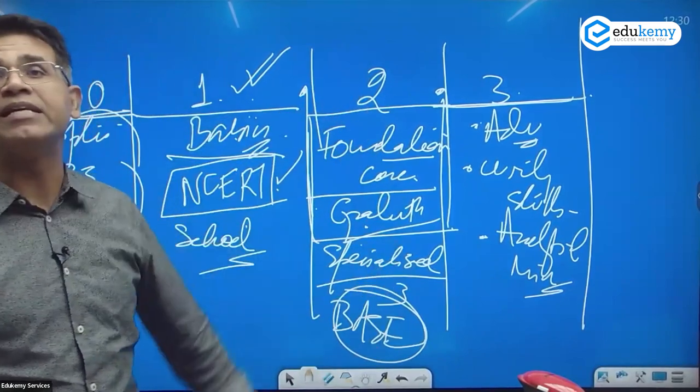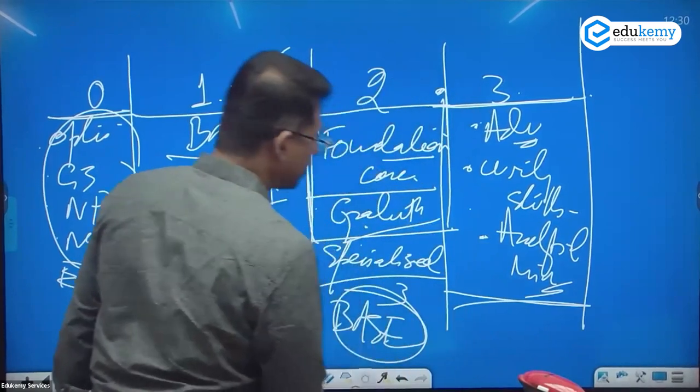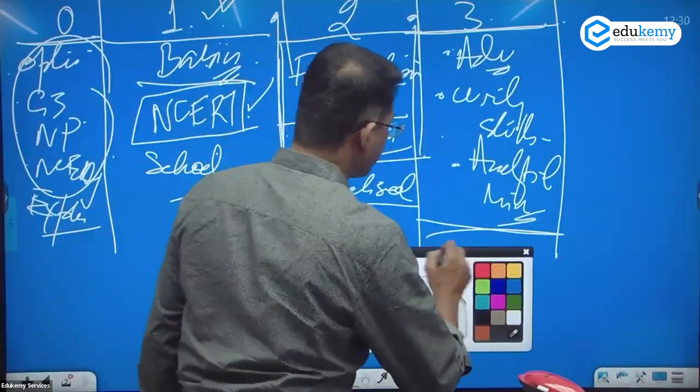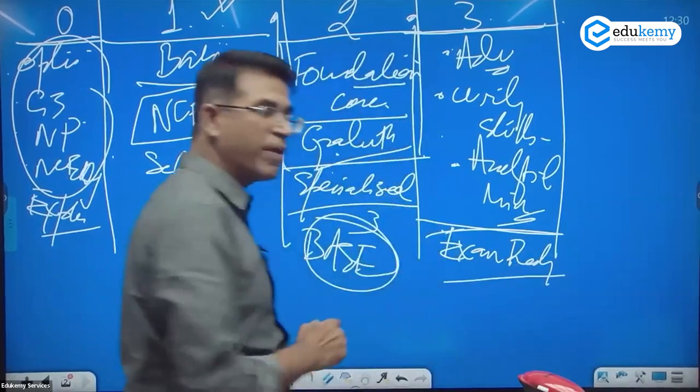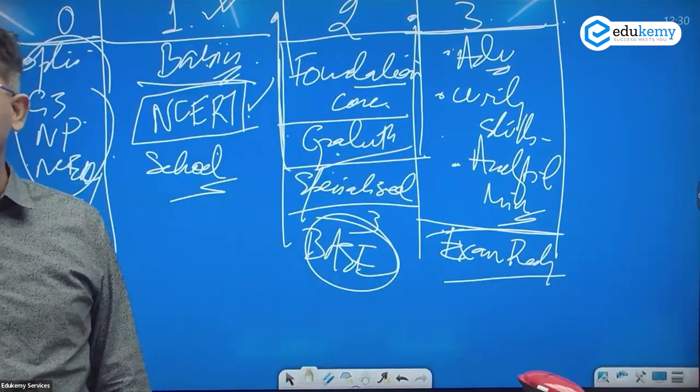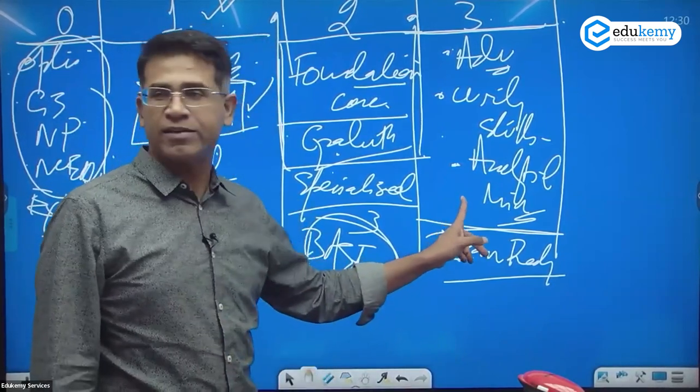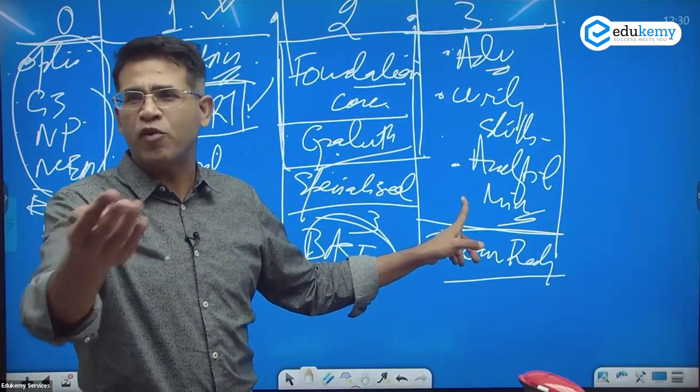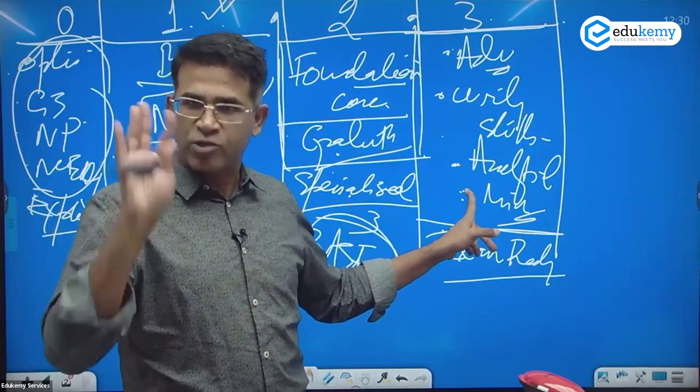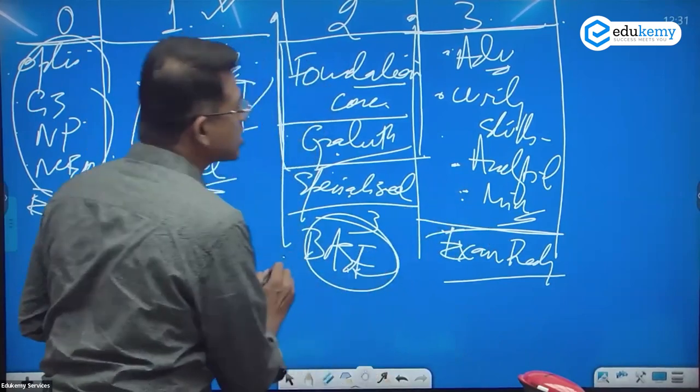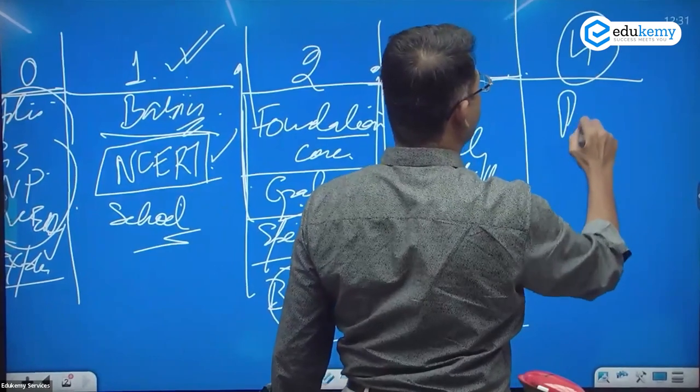In your question paper, out of 10 questions you will have at least five to six questions which are here, and maybe three or four odd questions are here. So if you're not ready here, you can't clear. This is the truth.